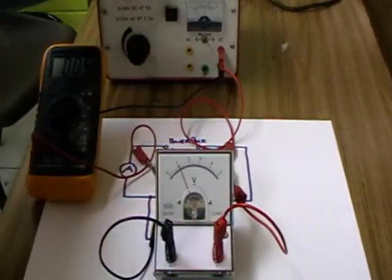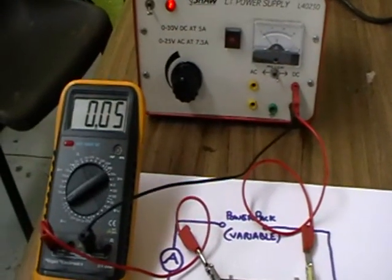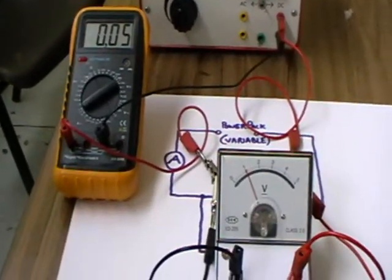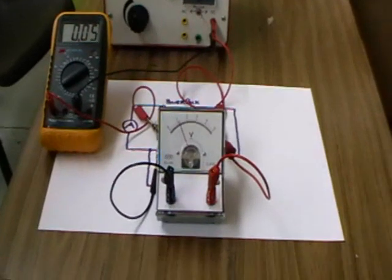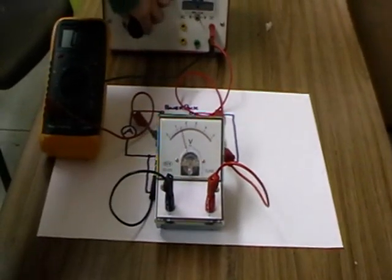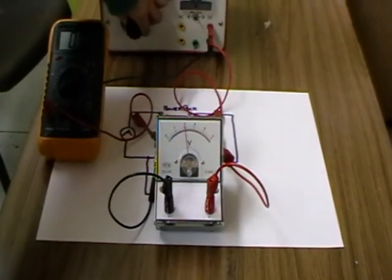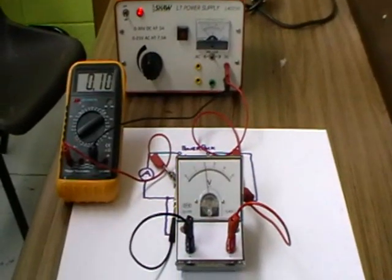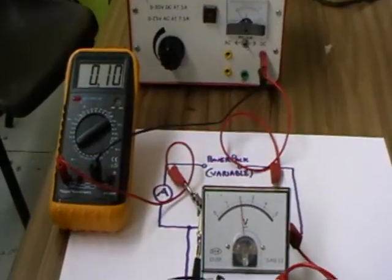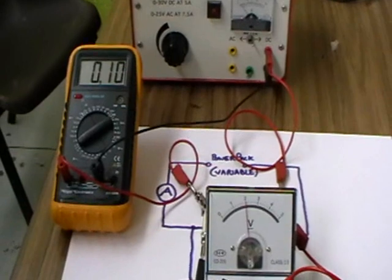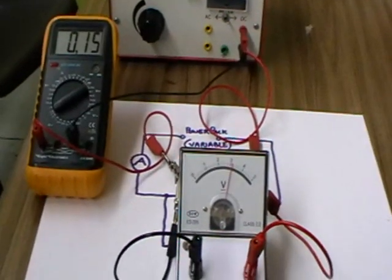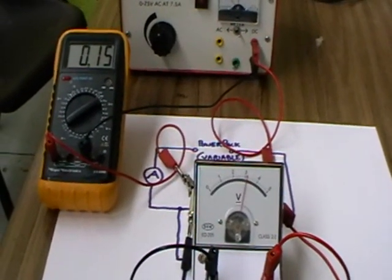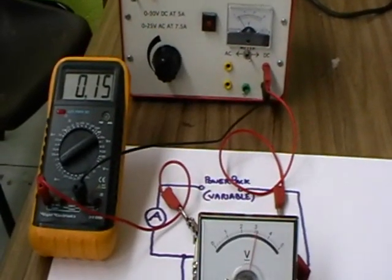Potential difference one volt, current 0.05 amperes. Potential difference two volts, current 0.1 amperes. Potential difference three volts, current 0.15 amperes.